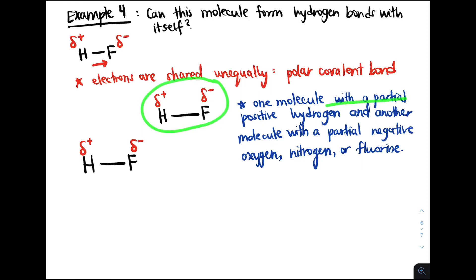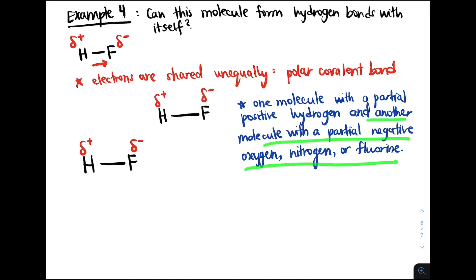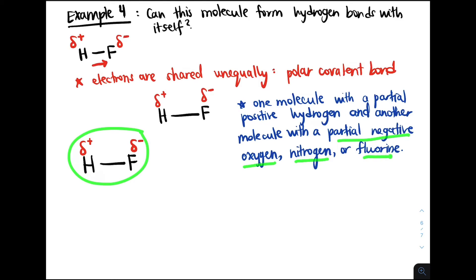This first molecule has a partial positive hydrogen. Looking at the other hydrogen fluorine molecule, we do have a partial negative fluorine. So this partial negative fluorine can hydrogen bond with the partial positive hydrogen. Because of this, a hydrogen fluorine molecule can hydrogen bond with itself, since it satisfies both requirements for a hydrogen bond to form.